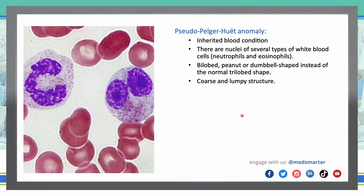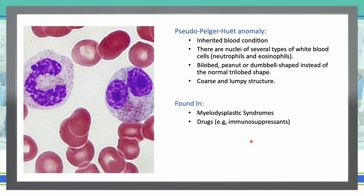Pseudo-Pelger-Huët anomaly is an inherited blood condition in which nuclei of several types of white cells, such as neutrophils and eosinophils, are involved. They look bilobed — peanut or dumbbell shaped — instead of the normal trilobed shape, and they are coarse and lumpy. We are going to see this in myelodysplastic syndrome and also with drugs such as immunosuppressants.